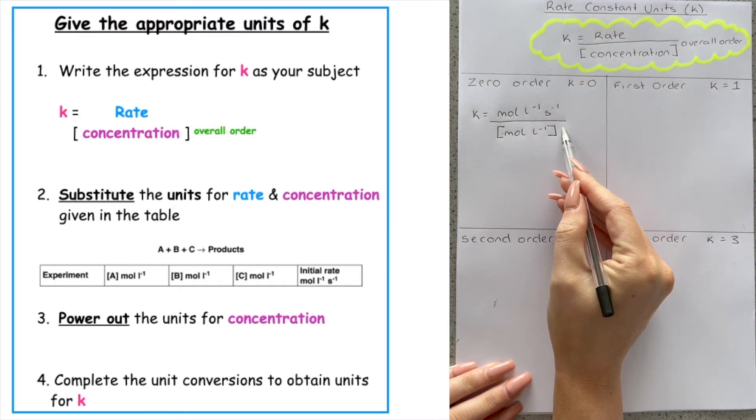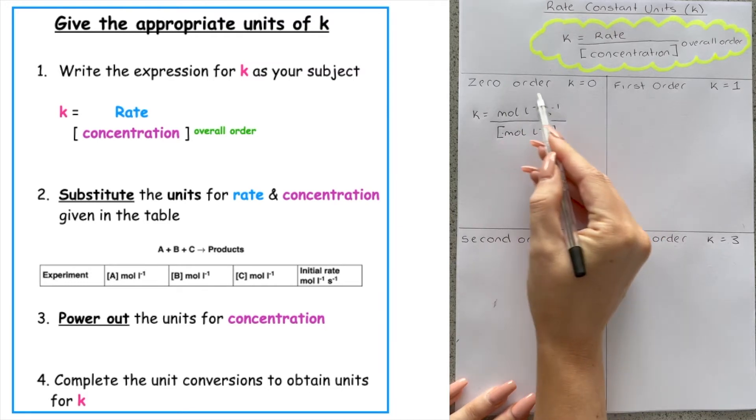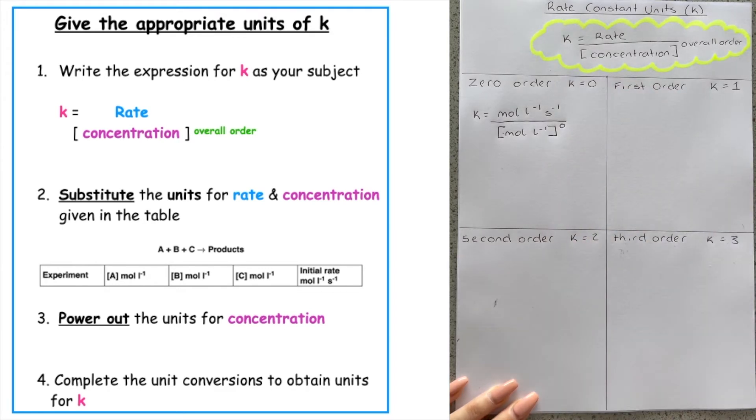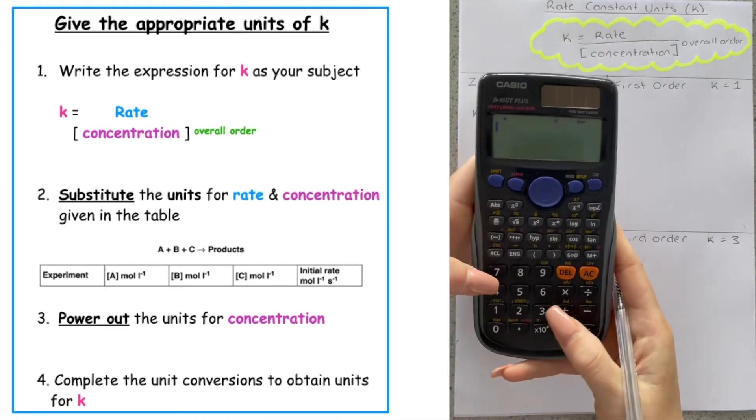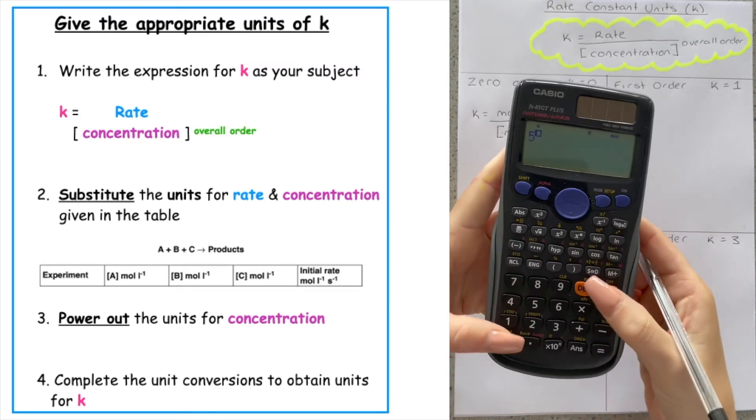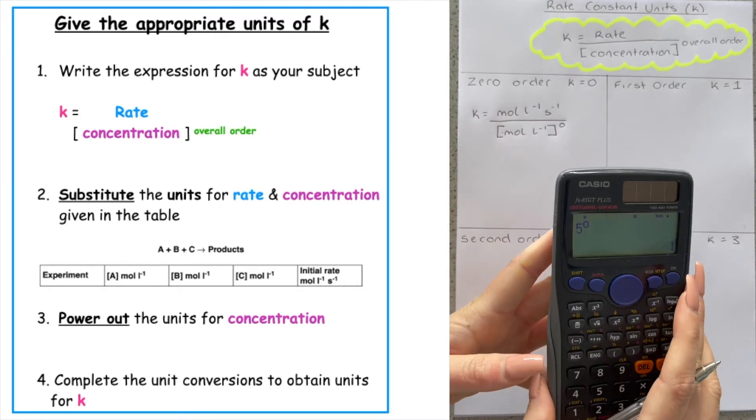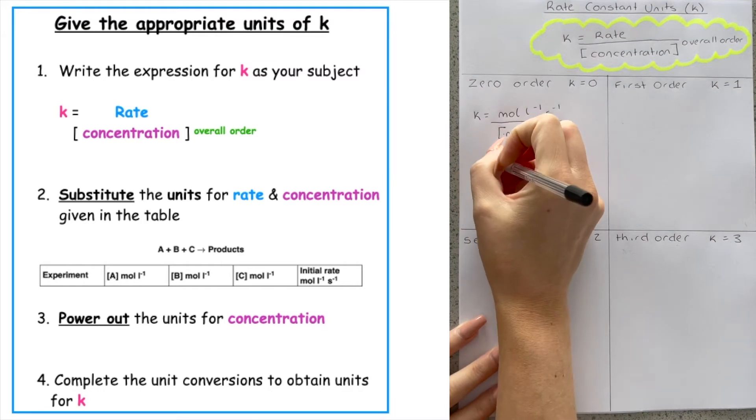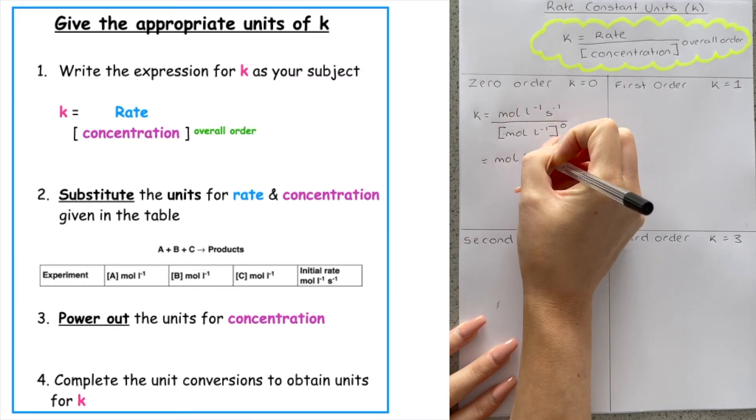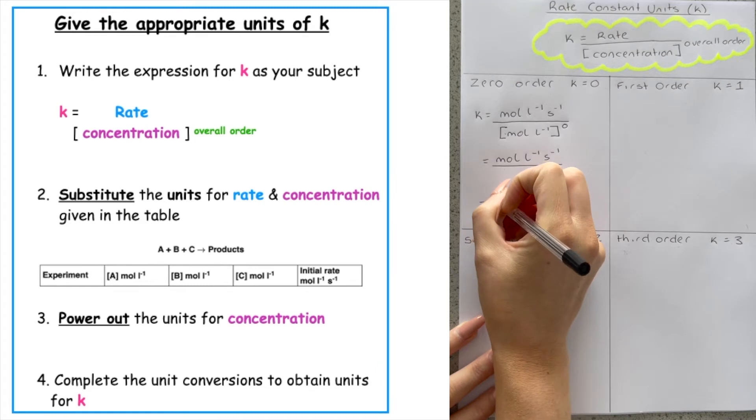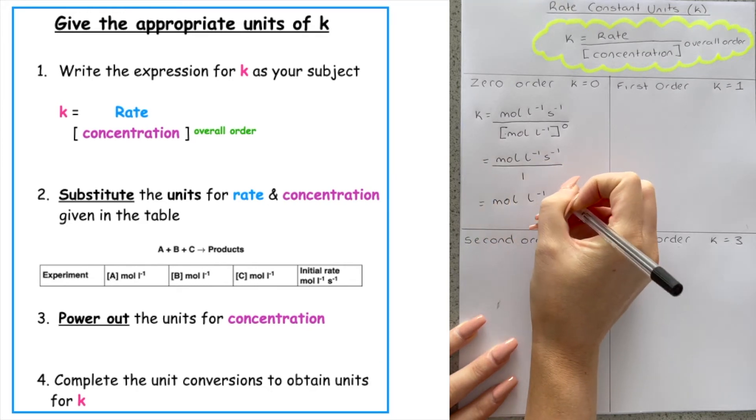Now what we have to do is we have to do the overall order of the reaction. If your overall order of your reaction was zero order, we do to the power of zero. Now if we use our calculator, and I was to do two to the power of zero, that would give me one. Five to the power of zero, that would give me one. So anything to the power of zero gives you one. So what we want to do with that is we then want to substitute this bottom unit for one. So the top line stays the same. So the overall units for zero order are mole per litre per second.